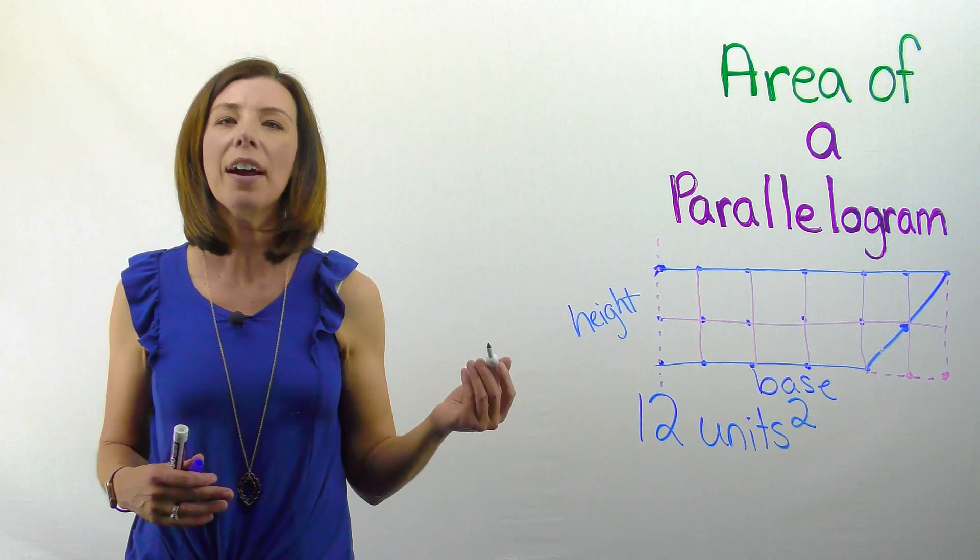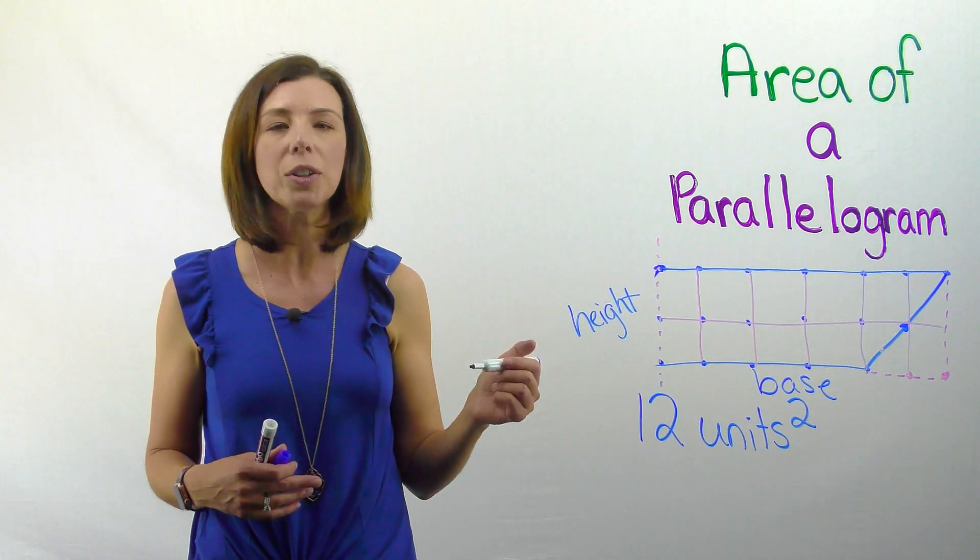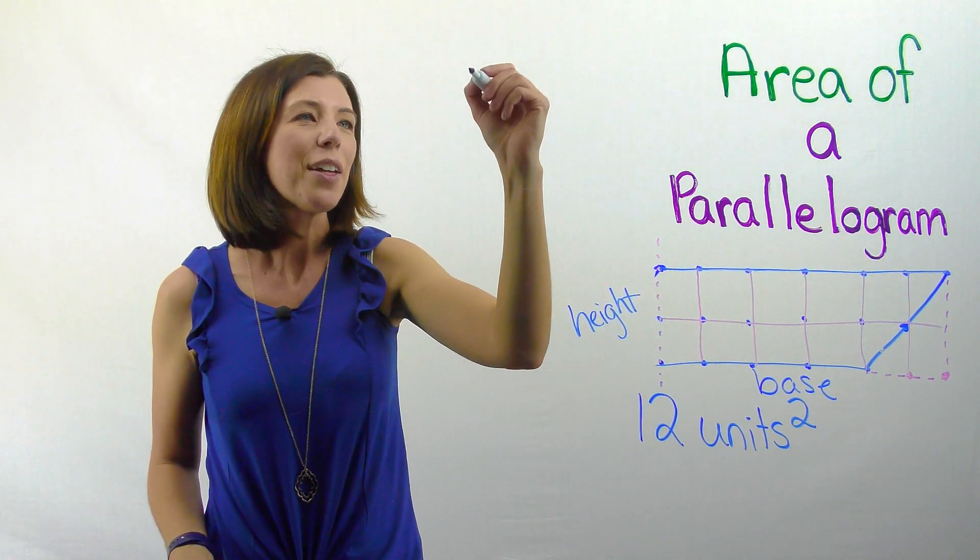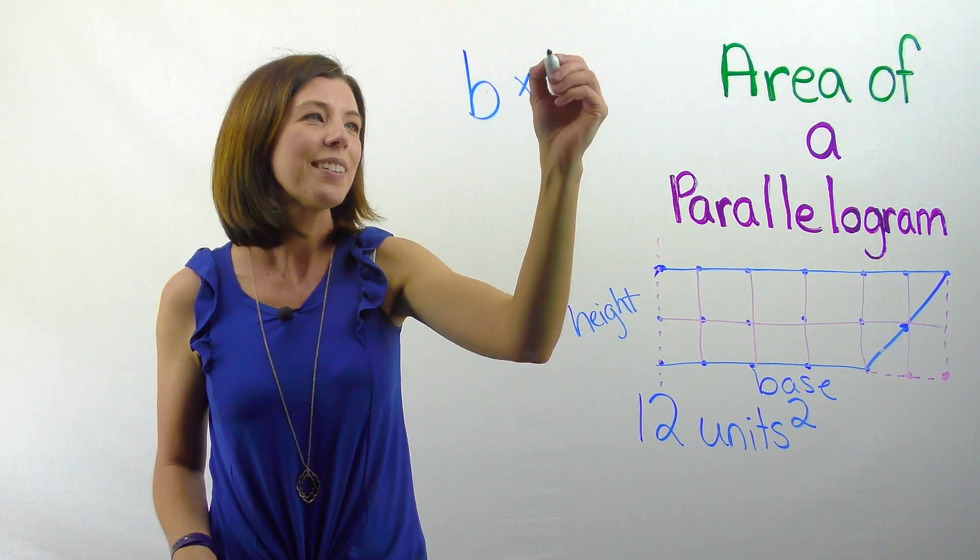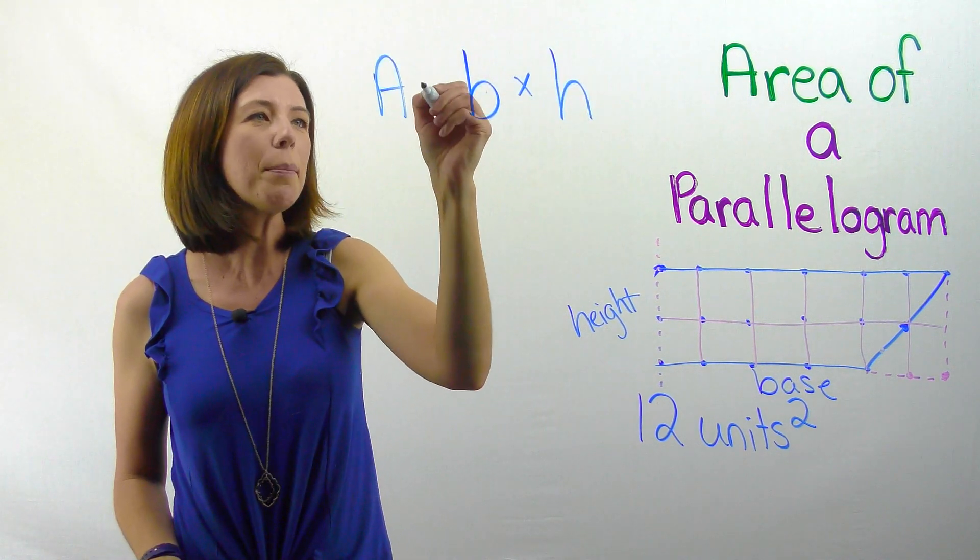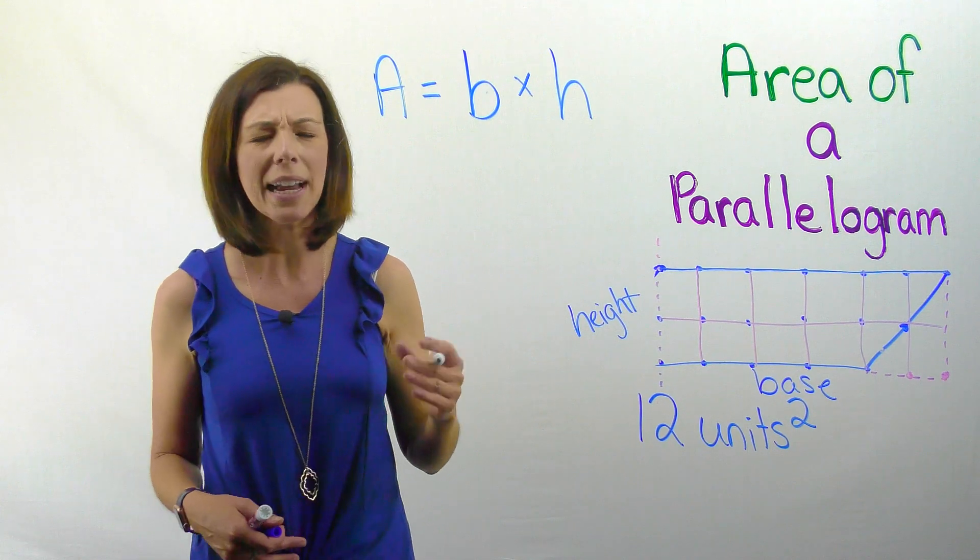So when I'm thinking about how to find the area for a parallelogram, I know that I can take the base times the height. So the area of a parallelogram is equal to base times height.